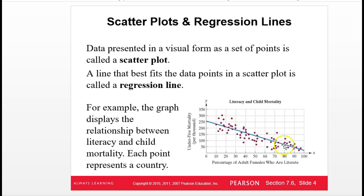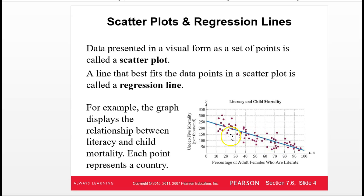With that trend line we can estimate. Each one of these points is a country — for instance, one particular point has about 45% literacy and about 120 deaths per thousand. If we had a gap, like if the literacy rate was 55%, we could use the height of that line — around 125 per thousand — to estimate the mortality rate. That's what these trend lines do: they give us a good prediction of where we might fall. This blue line is called a regression line, used to describe the trend we're seeing.